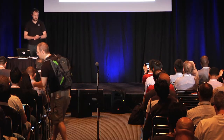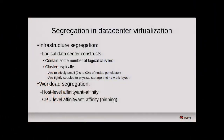In terms of segregation in the data center, we typically have some kind of logical constructs for segregating resources — a top-level container, which I'll refer to as a logical data center, containing some number of logical clusters. The size of a logical cluster in a traditional data center virt solution ranges from around 30 to hundreds of hosts — relatively small scale compared to the elastic cloud, and fairly tightly coupled to physical networking and storage layout.